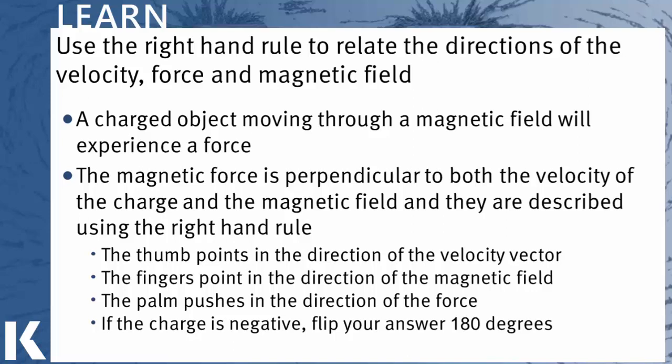You saw another right-hand rule in an earlier lesson where you looked at the magnetic field around a current carrying wire. That version of the right-hand rule was called the wraparound rule because we put our thumb in the direction of the current and our fingers wrapped around the wire in the direction of the magnetic field.